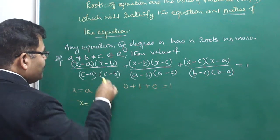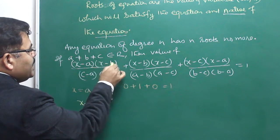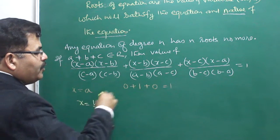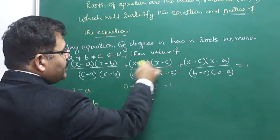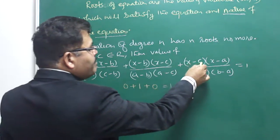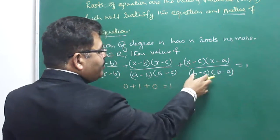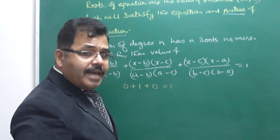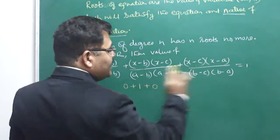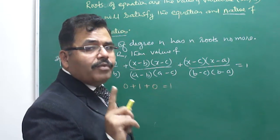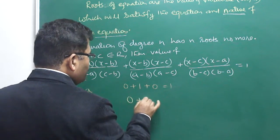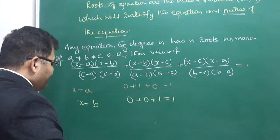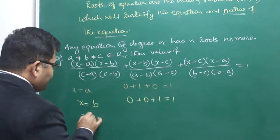If I put x equal to b, then (b-b) is 0, and 0 times anything is 0. For the second term, (b-c)/(b-c) and (b-a)/(b-a) — numerator and denominator are the same, so they cancel giving 1. So 0 + 0 + 1 = 1, which is also satisfied.